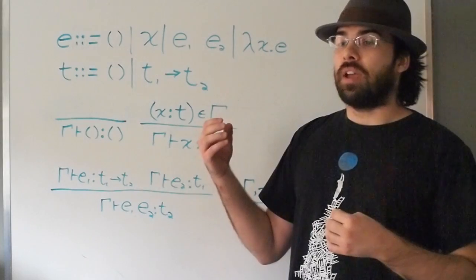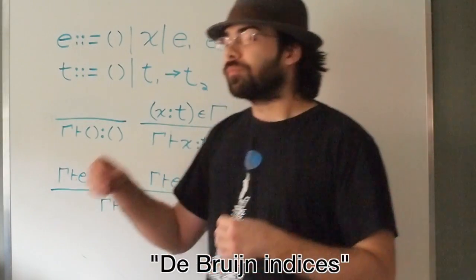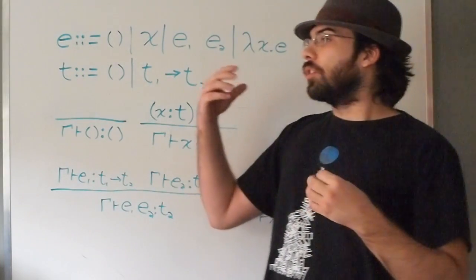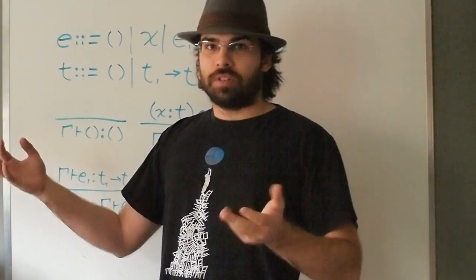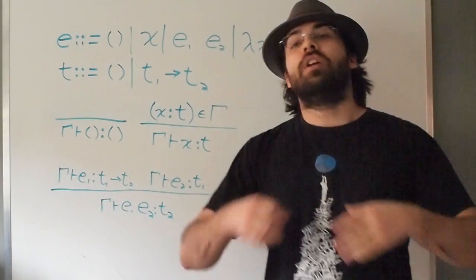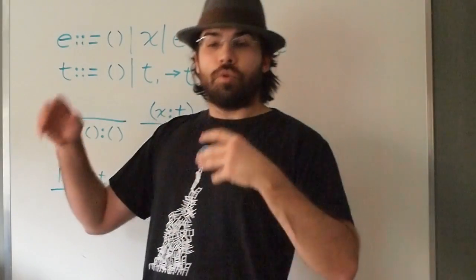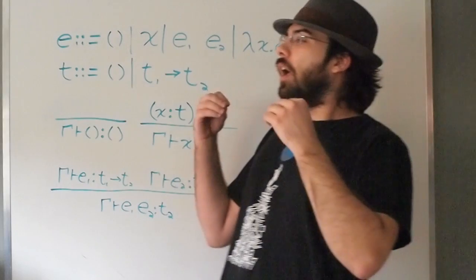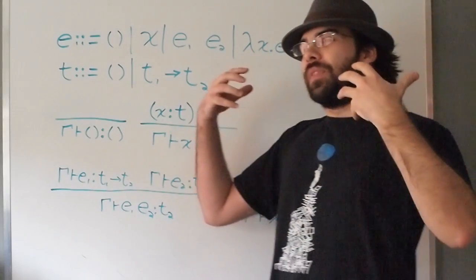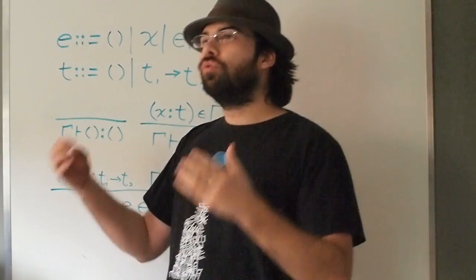One for bound variables which are represented by Bruijn indices, basically integers, and the free variables which are represented in a more free manner using for example strings or whatever the representation which you need for your program.